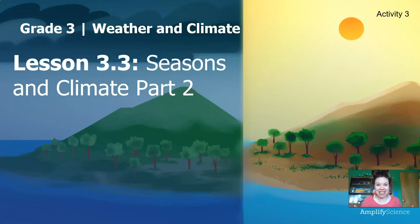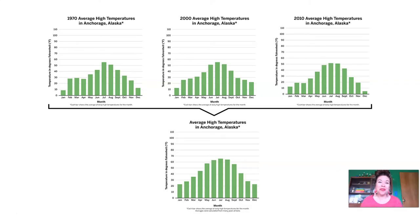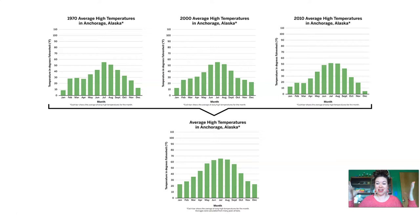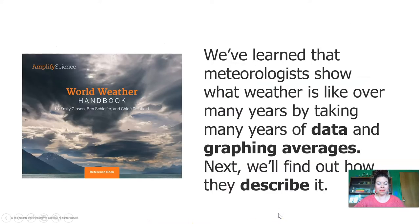Are you ready to do some science thinking? Do you remember in Part 1, we were talking about how meteorologists take lots of years of weather data and they find averages. Averages are numbers that are in the middle, easy for us to understand, so that we can take a lot of data and boil it down to just one number so we can easily compare and understand it. We've learned that meteorologists show what weather is like over many years by taking many years of data and graphing averages. Next, we'll find out how they describe it.